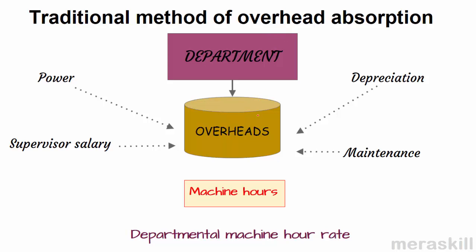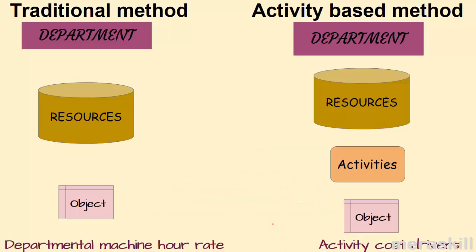Traditionally, department-wise we would find out what the overheads are — power, supervisor salary, depreciation, maintenance — and make a total of all the indirect costs. Then, based on machine hours or labor hours depending on the nature of the department, we arrive at a rate. We take estimated overheads and estimated machine hours for the next period, arrive at a departmental machine hour rate, and apply this rate to the products. What is the difference in activity-based costing?